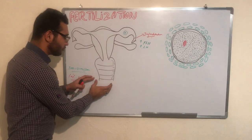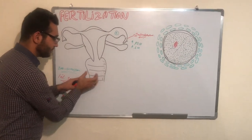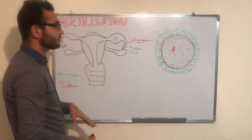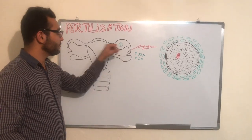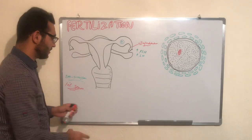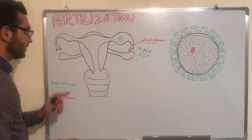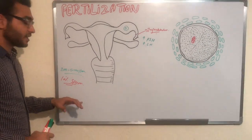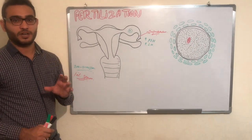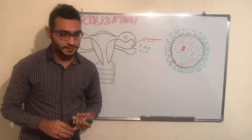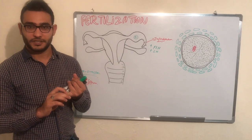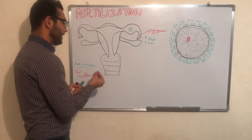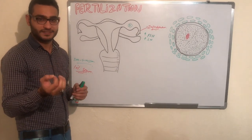Sperm is ejaculated into the vagina. How do these sperms reach the site of fertilization — the ampulla region? The composition of the sperm includes fructose, protein, amino acids, and an enzyme known as vesiculase enzyme.